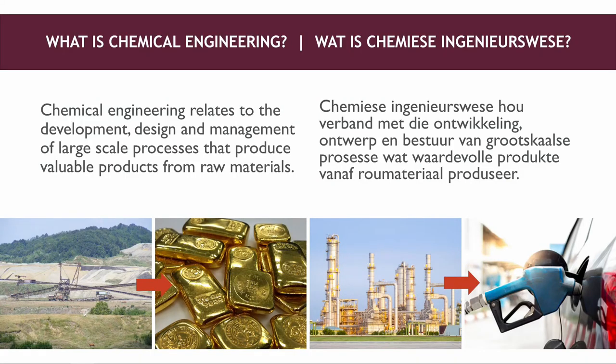One of the first questions that we have is: what exactly is chemical engineering? What we do as chemical engineers is take raw materials and convert them into valuable products. For instance, an important industry in South Africa is mining ore, which has a small amount of gold. We extract that gold, purify it up, and then make it into jewellery or electronic circuits.